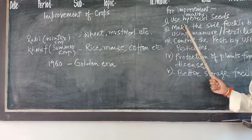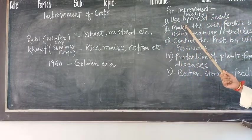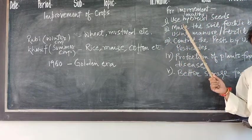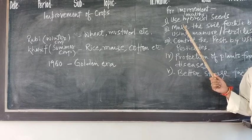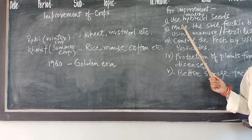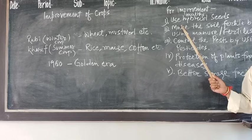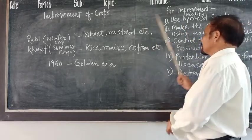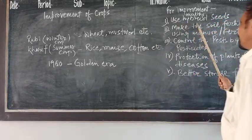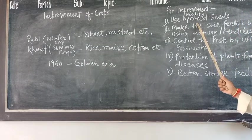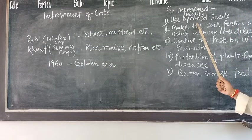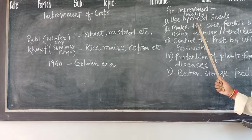The first step is: use newly researched, healthy, hybrid seeds for sowing crops. Always use healthy, hybrid, newly researched seeds for sowing crops.